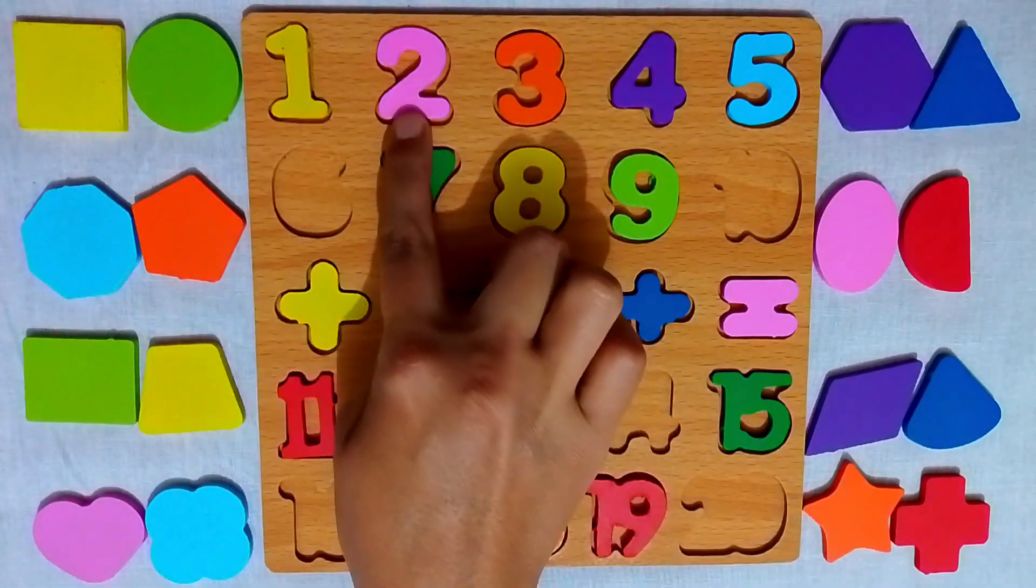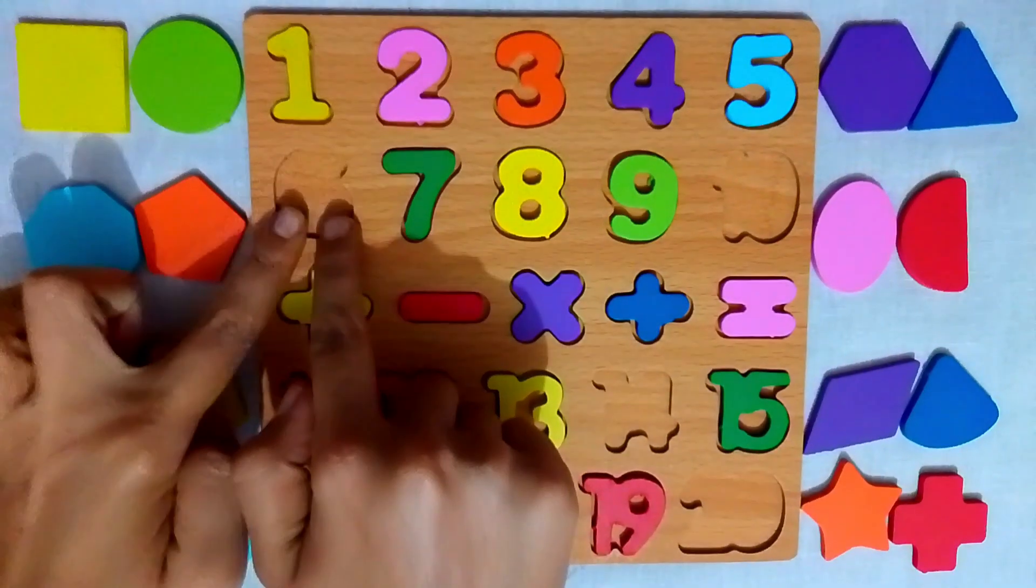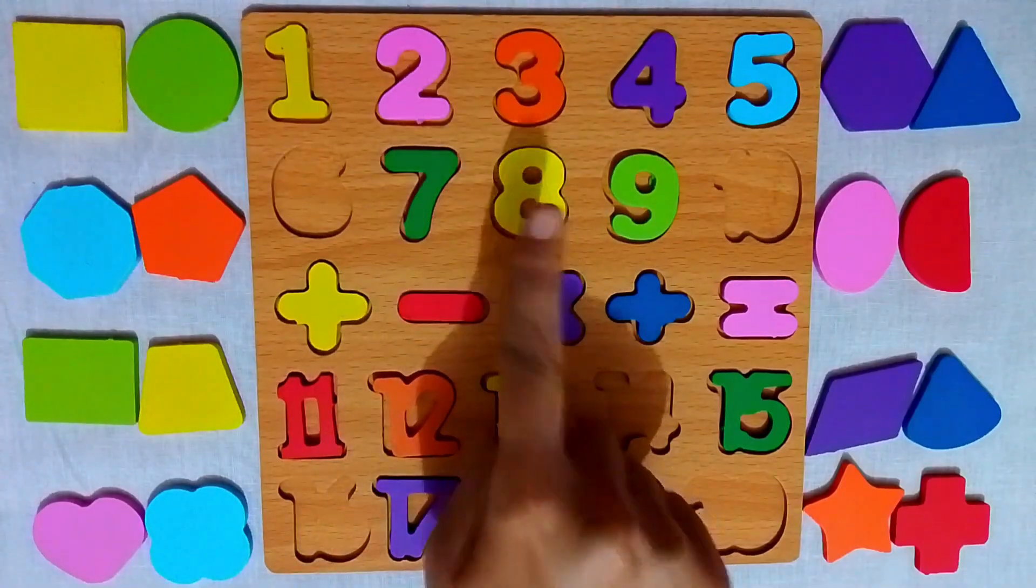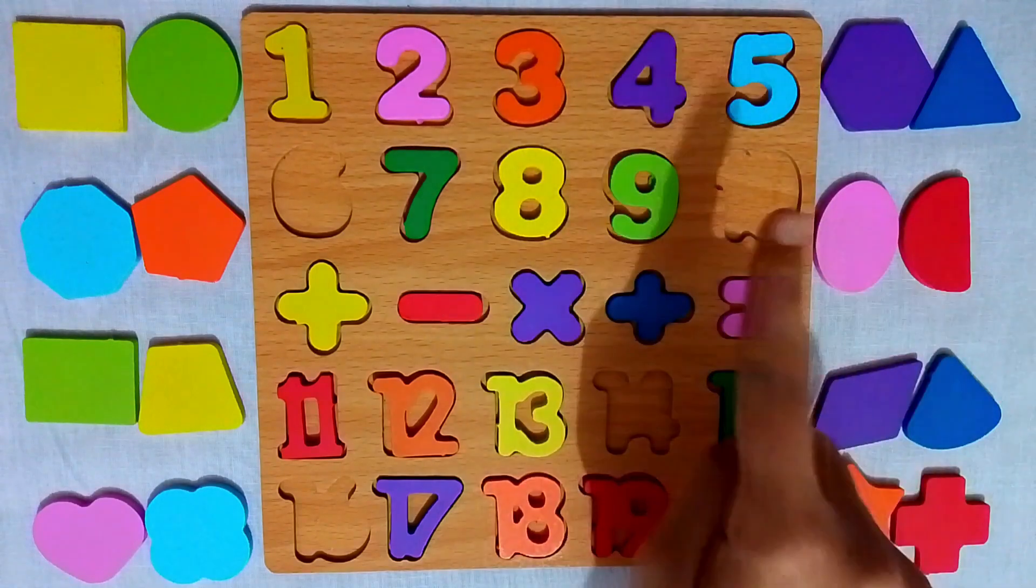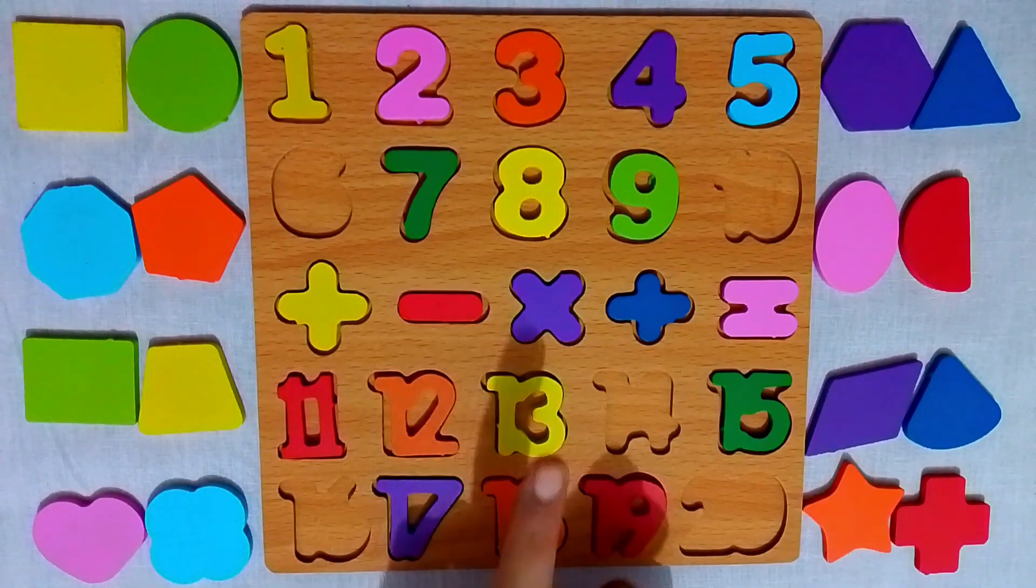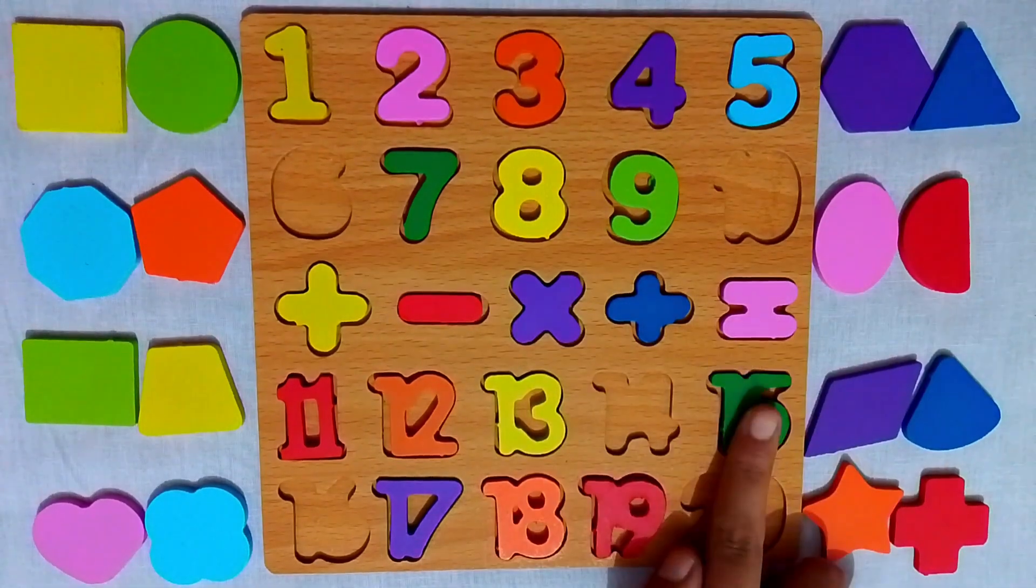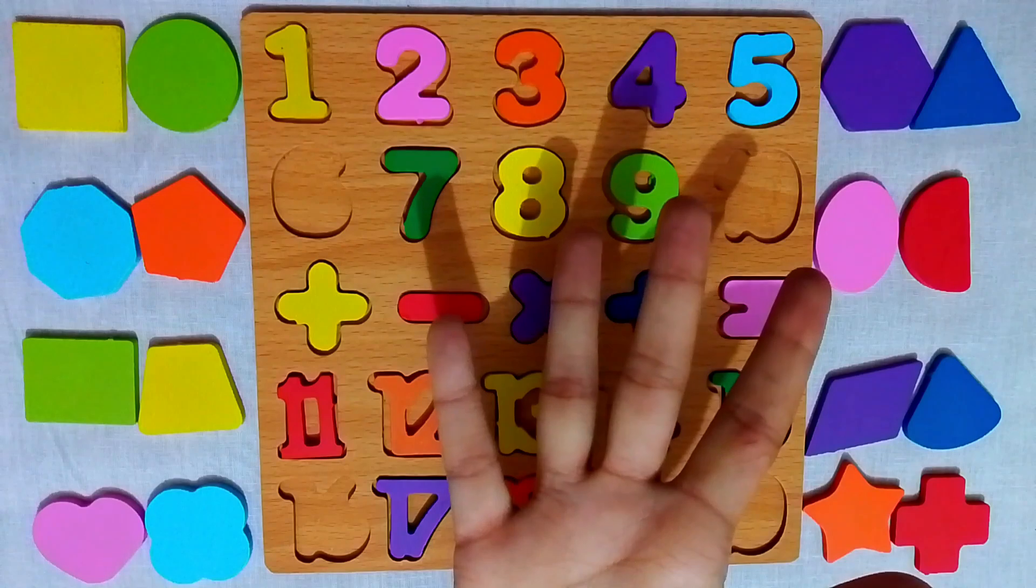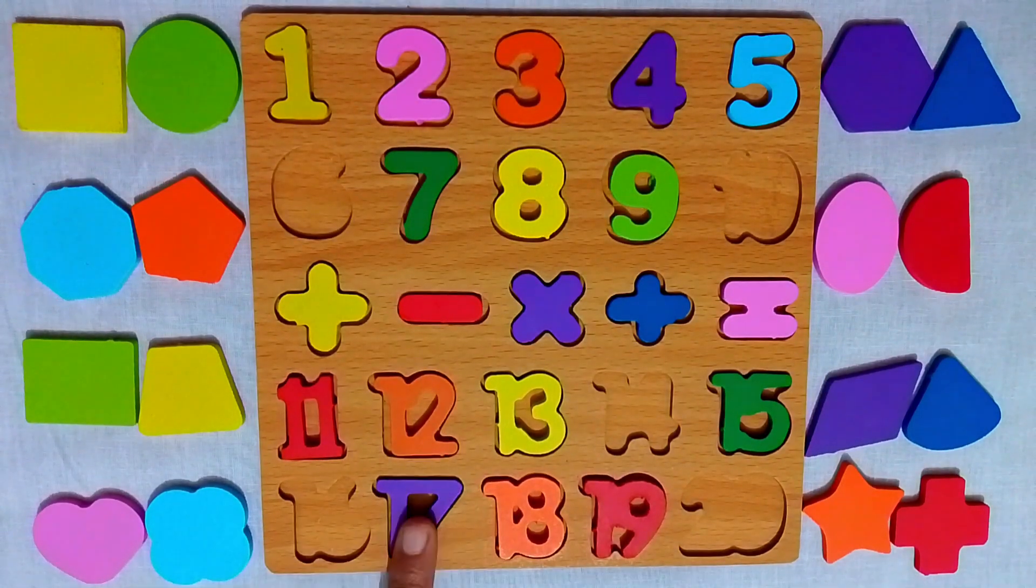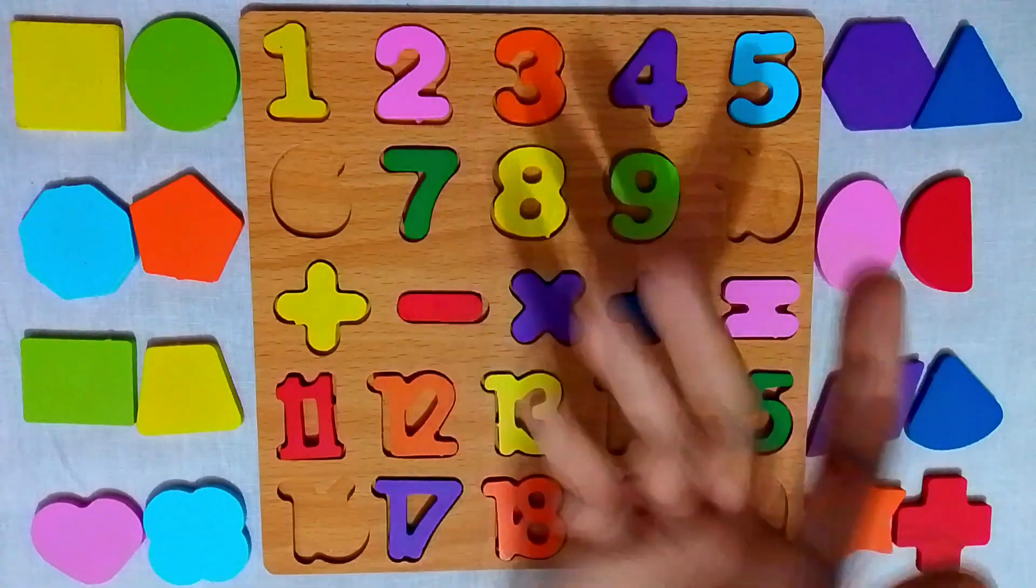1, 2, 3, 4, 5. Oh! Number 6 is missing. 7, 8, 9. And number 10 is missing. 11, 12, 13. Wait, number 14 is missing too. 15. Oh! Number 16 is also missing. 17, 18, 19. And number 20 is missing.